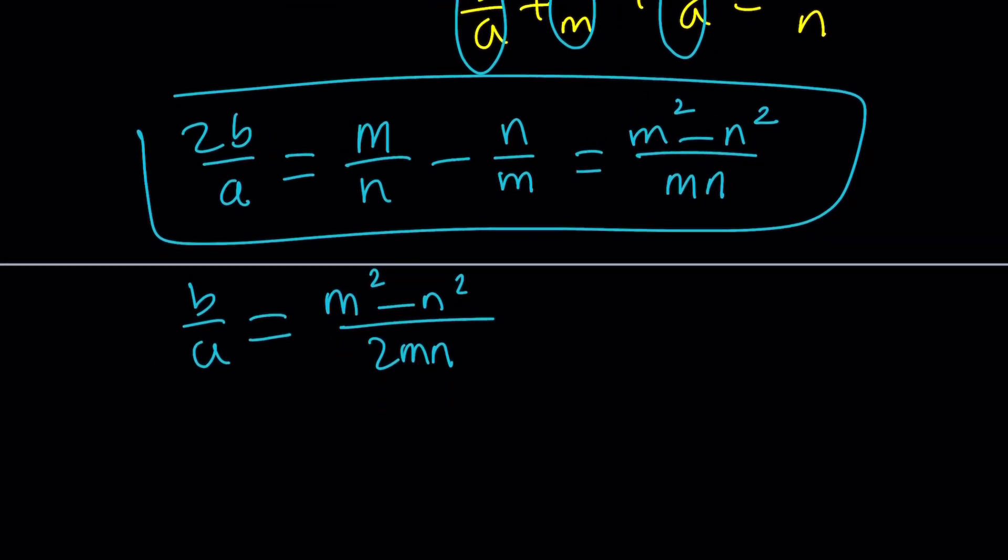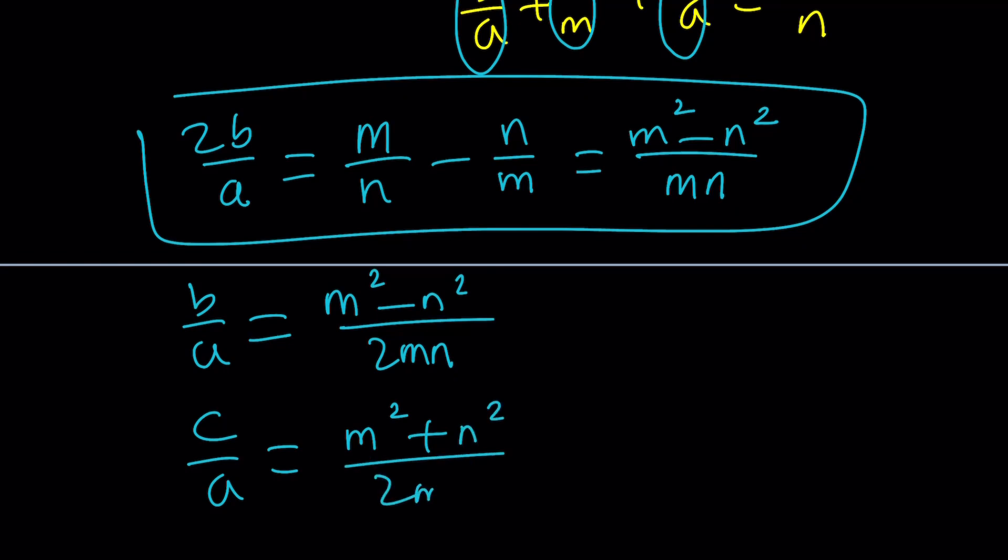Now, here's the thing. Similarly, if you plug this in and do the math, let me give it to you without further ado, you're going to get, for c over a, something super duper similar. Awesome. Now, we do have two things. What can we do with them?